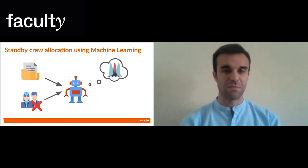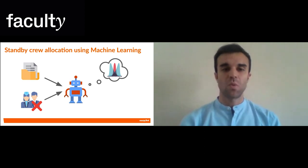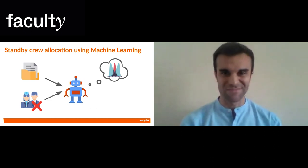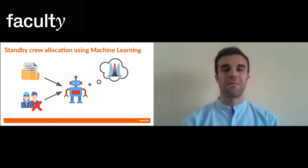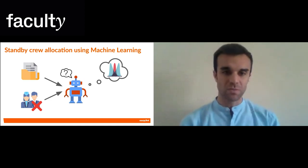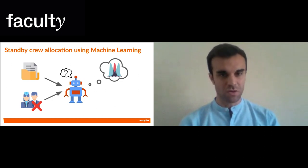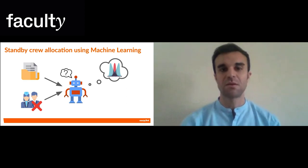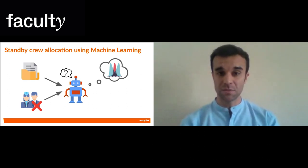But what does it mean? It means that it can answer the question: what is the probability of having, say, 10 missing people in Luton tomorrow morning? But even with these probabilities, how does the model know what scenarios it should cover? In other words, what is the risk it should take when allocating crew? What are the actual numbers to pick?